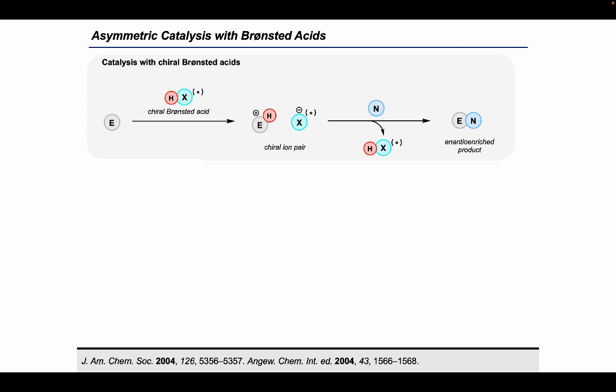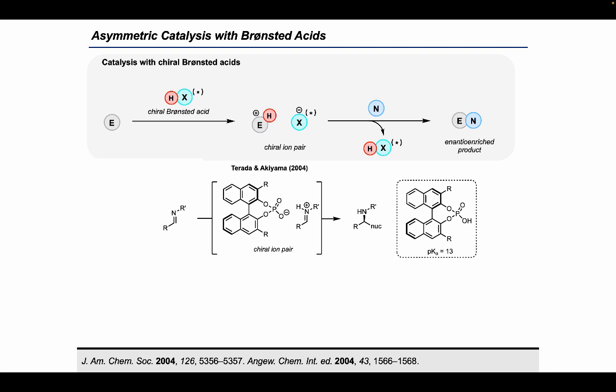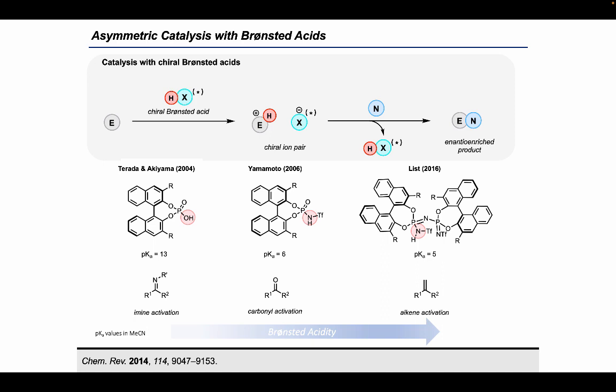The first demonstration of this type of catalysis was carried out by the groups of Terada and Akiyama, now around 20 years ago. These were simultaneous and independently crafted reports. They both discussed the use of chiral phosphoric acids based on the BINOL scaffold that allowed for enantioselective nucleophilic addition to imines, or in this case, iminiums. Since this important seminal discovery, there's been a large interest in rendering these types of catalysts even more acidic.